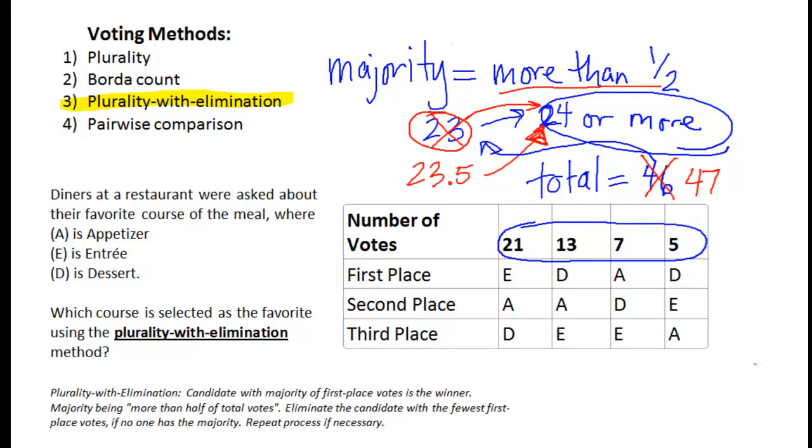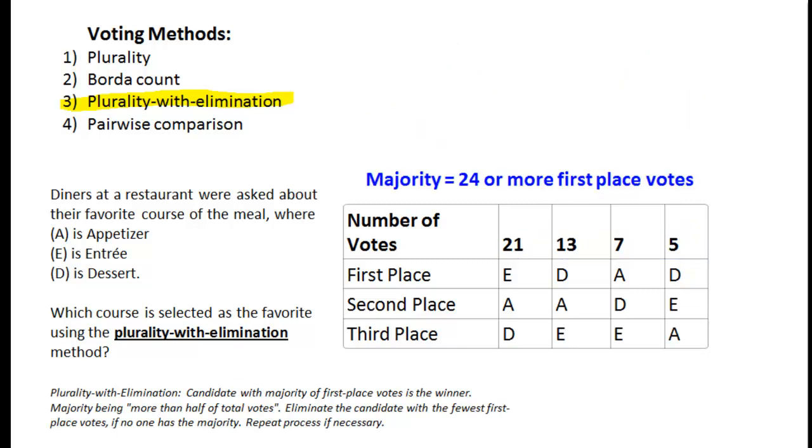So now we've established what a majority is. In this particular case majority is 24 or more. Now as you can see, the majority is 24 or more of the first place votes and the entree has a total of 21 first place votes right now. The desserts, the 13 and the 5, have a total of 18 first place votes, whereas appetizers only had 7 first place votes. So neither one of these, the entrees, the desserts, the appetizers, none of these have a majority. None of them are 24 or more.